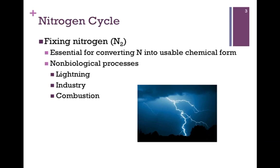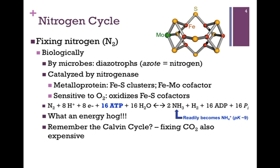Fixing nitrogen, or converting it to a chemical form, is absolutely essential for most organisms on planet Earth. There are non-biological processes that accomplish this, such as lightning strikes, industry, and combustion. But the chemical form it is converted into is not readily assimilable, so we need a different process for biological consumption. For this, we rely on microbes that are capable of fixing nitrogen. These microbes are referred to as diazotrophs. Azote simply refers to nitrogen, and since this is dinitrogen, it's a diazotroph.